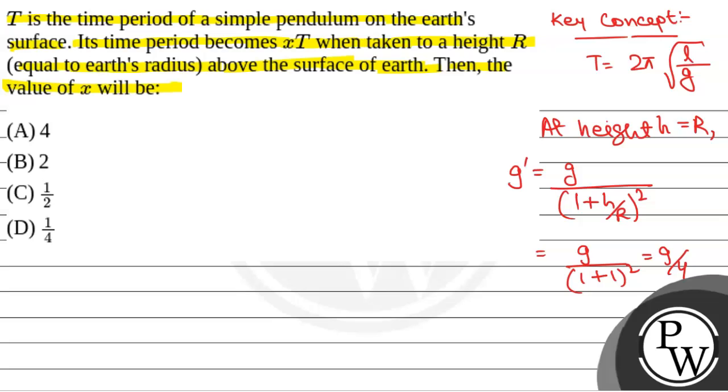The new time period T' will equal 2π√(L/G'). Since G' is G/4, that will be 2π√(4L/G), and this equals X into T.